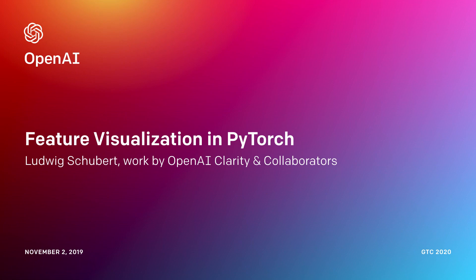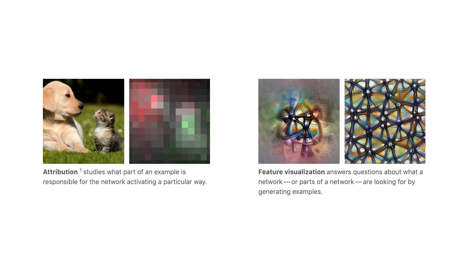To help explain what feature visualization is, it's useful to contrast it with attribution methods. Attribution methods, for a specific example, try to explain what parts of that example caused the network to behave in a particular way. Feature visualization, on the other hand, tries to answer questions about network behavior — like what specific parts of the network are looking for or detecting — by generating synthetic examples through optimization. In the simplest case, that might be a question like what is a specific neuron looking for.